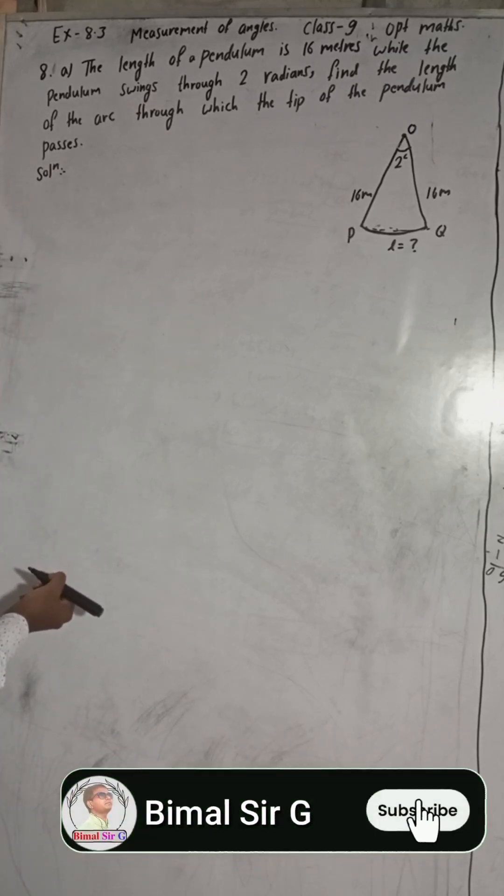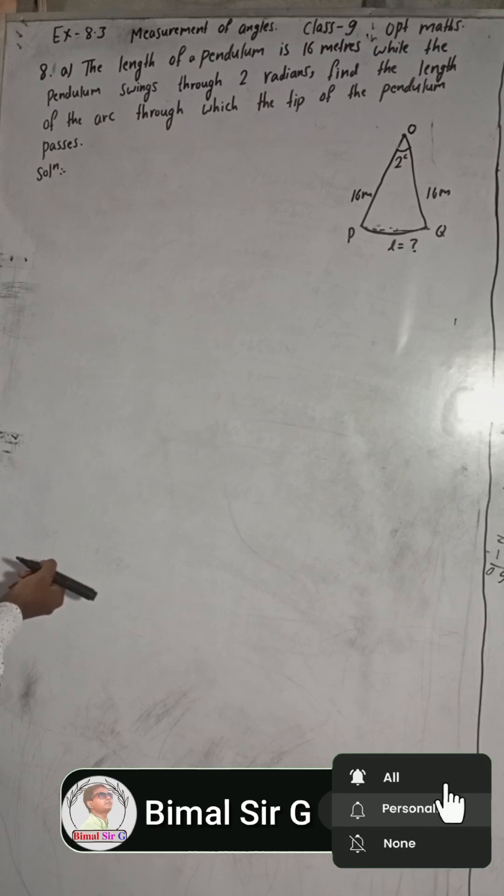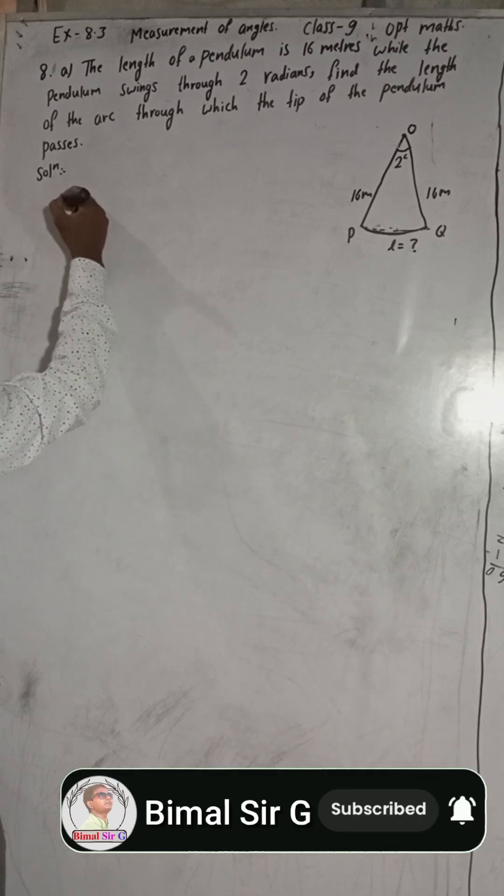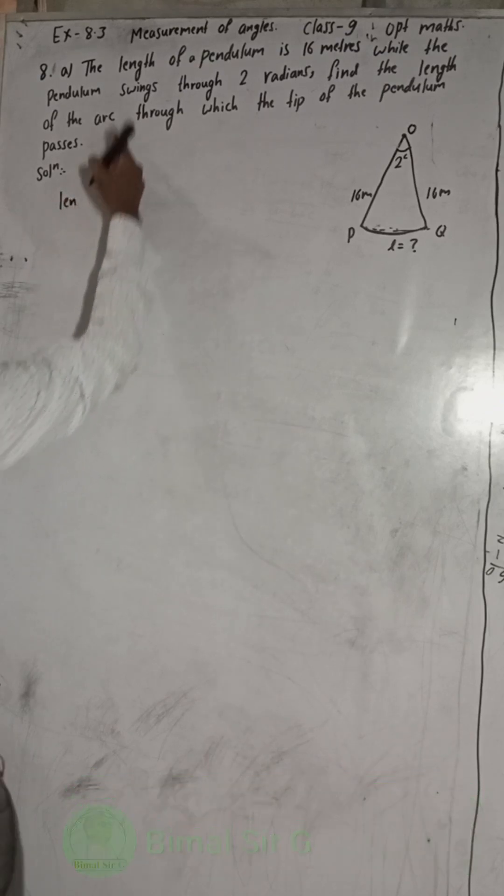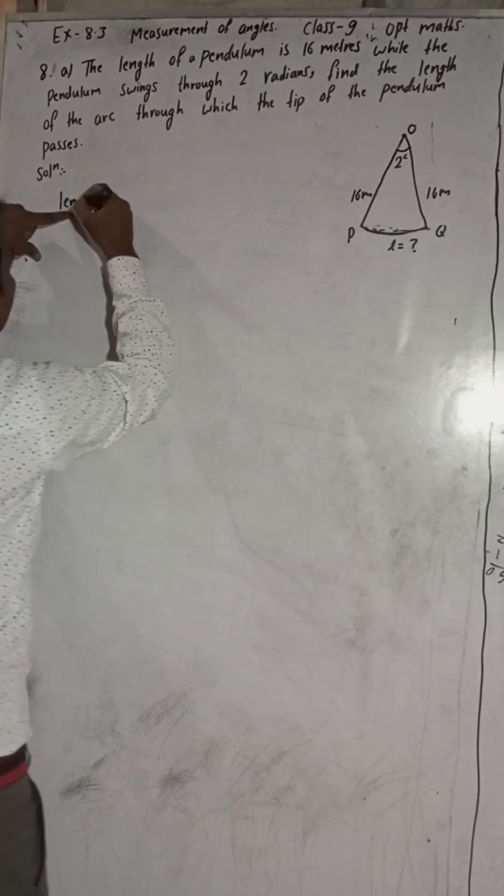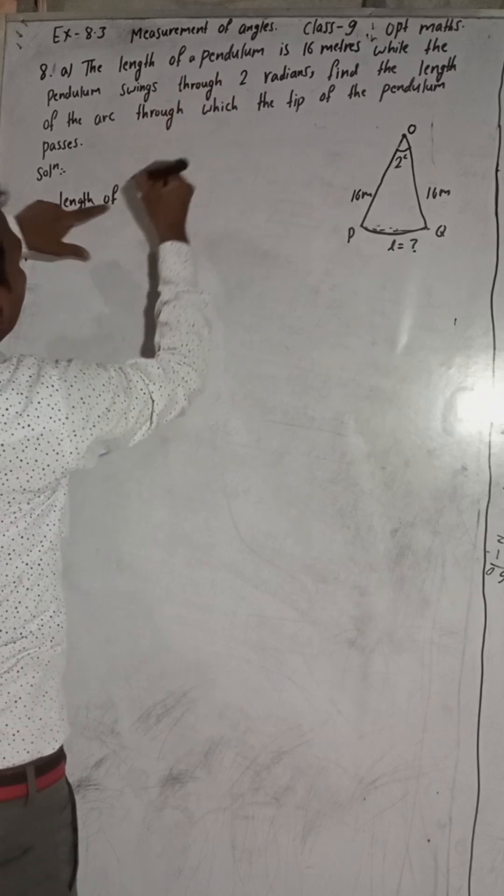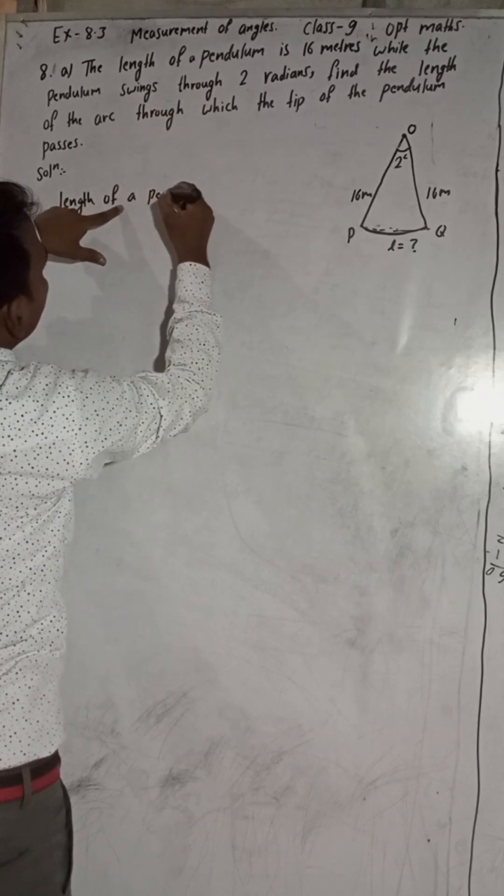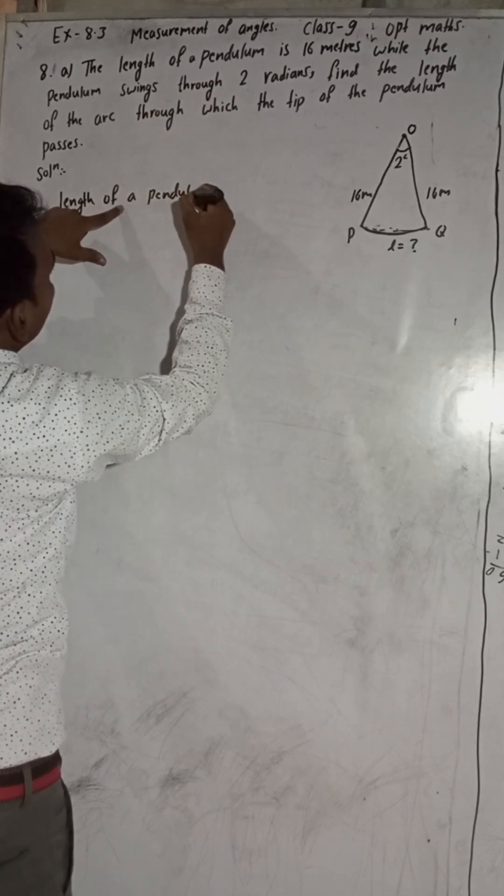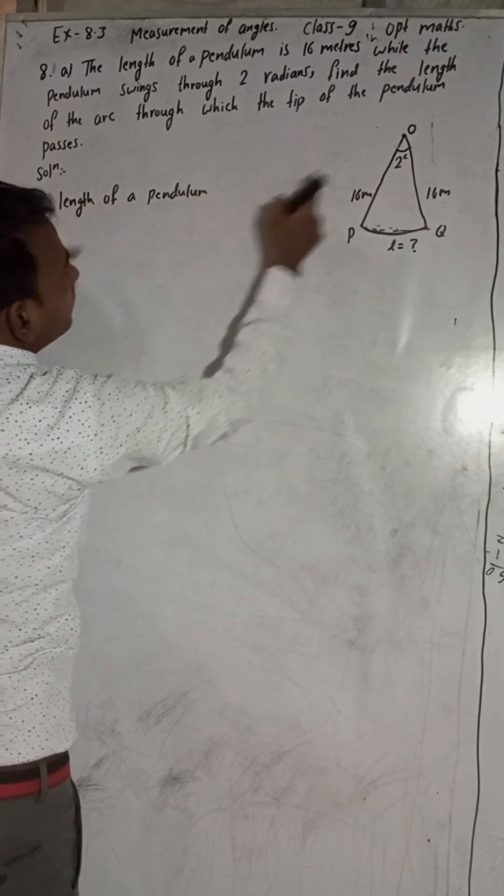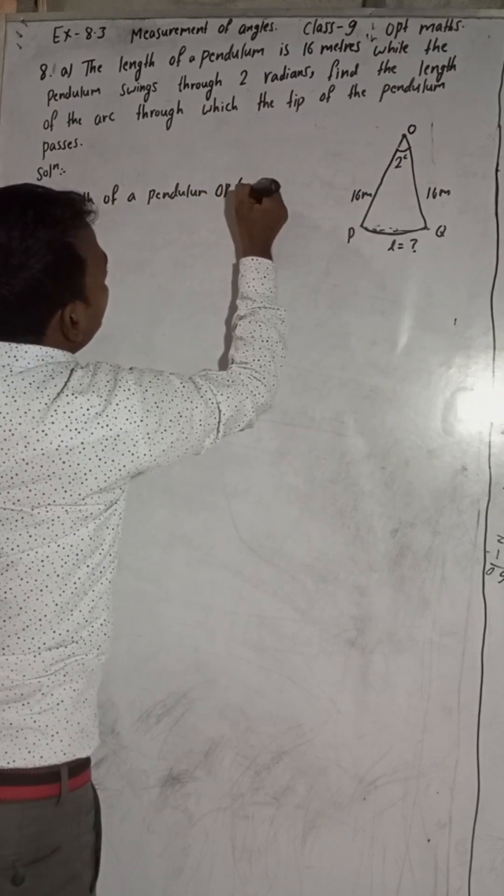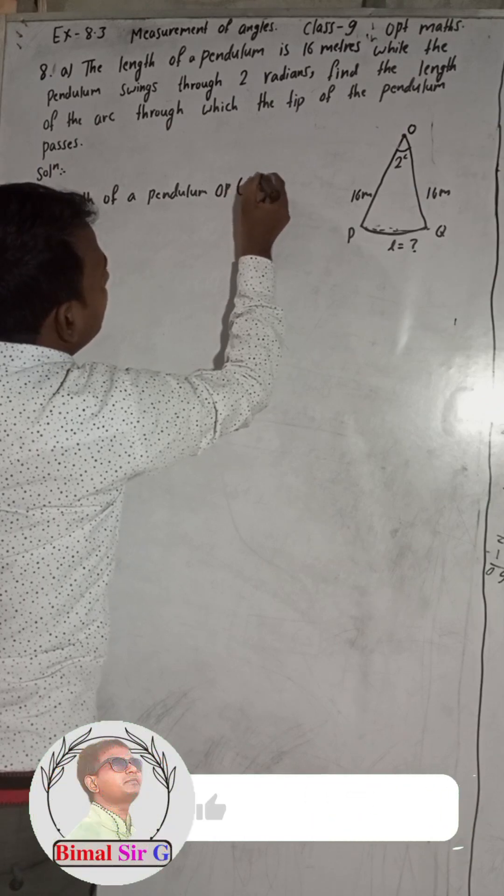Now we have to find this. So from the question we can write here, the length of the pendulum. Length of the pendulum means length of the pendulum OP. So this OP, OP is R. OP is the length of the pendulum, so R.